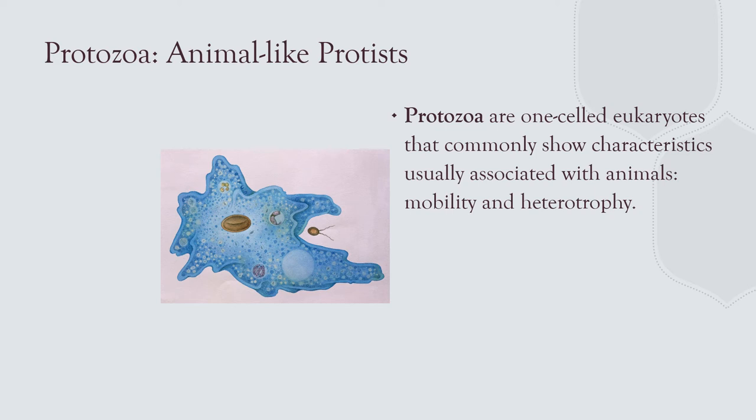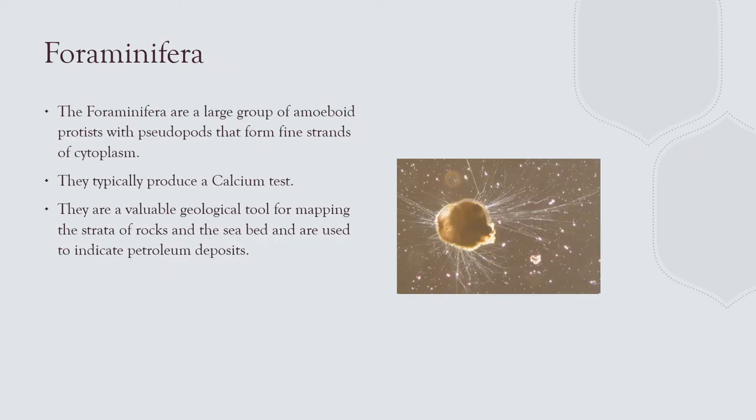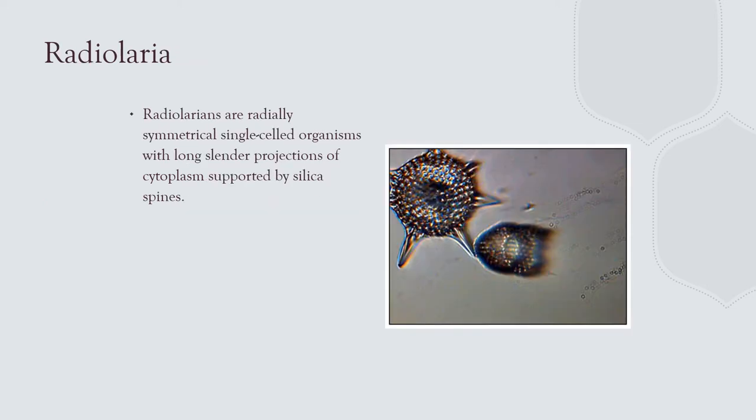Animal-like protists — we call them protozoa — are primitive animals: single-celled, eukaryotic, and they show characteristics of animals like movement and feeding. Foraminifera are among the most important; they have little calcium tests. Radiolaria have silica projections or spines radiating from their bodies.